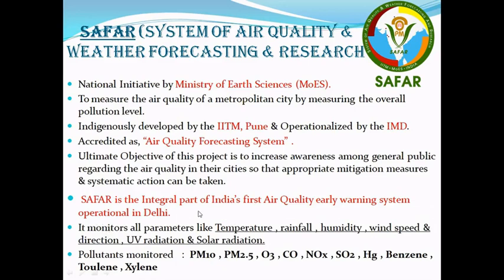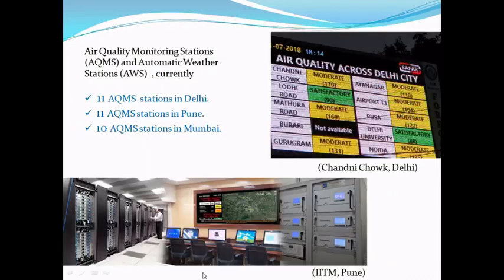The SAFAR unit measures various parameters: temperature, relative humidity, wind speed and direction, UV and solar radiation. It also measures air pollutants such as PM10, PM2.5, ozone, carbon monoxide, NOx, sulfur dioxide, mercury, benzene, toluene, xylene, and more.